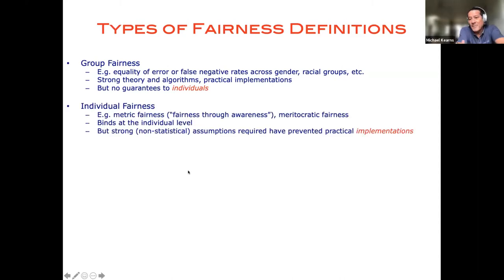So this has not been lost on the research community. And so there have been a number of attempts to come up with definitions of fairness that can be enforced at the individual level that really make promises to you specifically. And so examples include what's sometimes called metric fairness or fairness through awareness or meritocratic fairness, which, for instance, to give you a flavor of it might posit some distance metric between individuals and ask that similar individuals or nearby individuals should be treated similarly. So if you and I have similar loan applications, we should have similar probabilities of getting a loan.